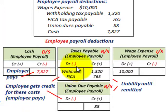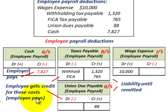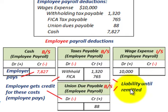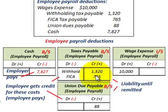Now let's look at how we'd record these entries. For employee payroll deductions, these are costs the employee pays, but the company takes them out of their pay. The company sets up a liability until the taxes and union dues are actually remitted. So we credit taxes payable for the withholding tax of $1,320 and the employee's FICA of $765, and also credit union dues payable of $88, which is taken out of the employee's check.